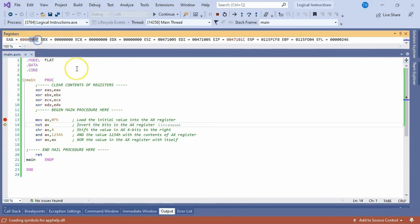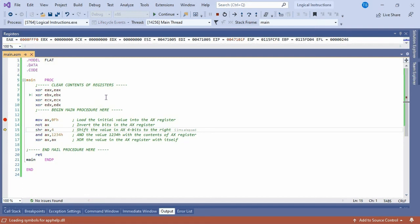Remember to press F11 to execute the move instruction. Press F11 and look at the results in the AX register to see that it changed to FFF0 as a result of the NOT instruction.